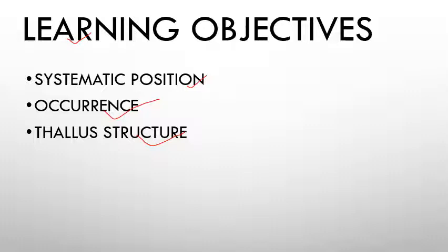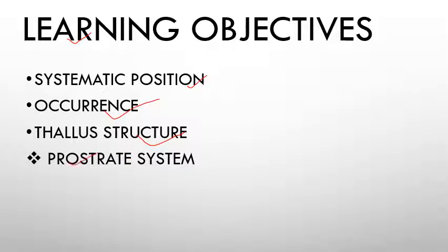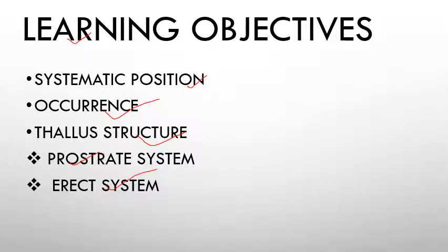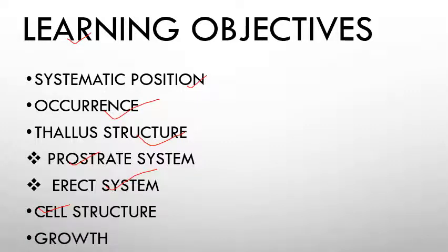Heterotrichous means the genus which shows both erect and prostrate systems of habit. The plant body is divided into a prostrate system — which runs horizontally on the substratum — and an erect system — which grows upright from the prostrate system. We will also discuss cell structure and growth of Ectocarpus.